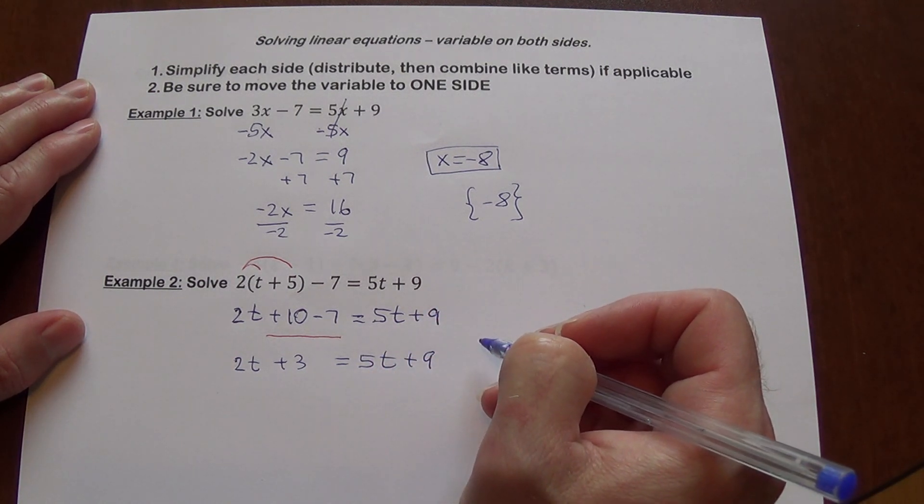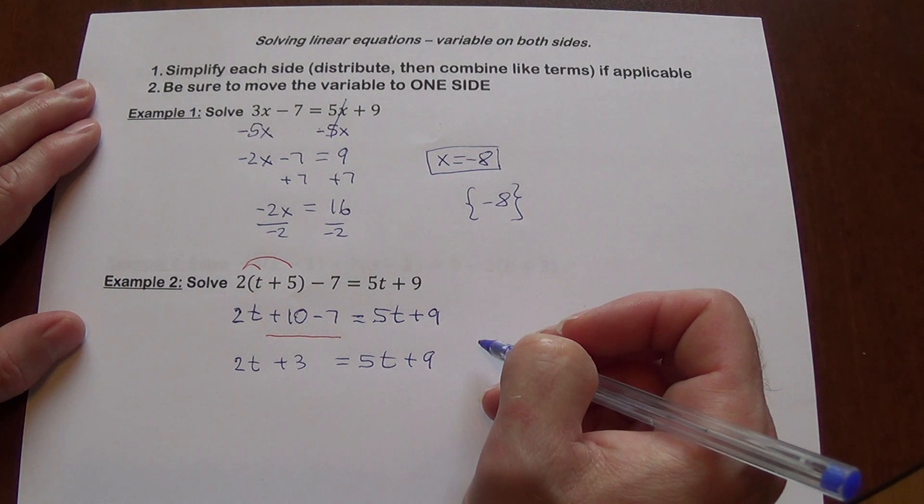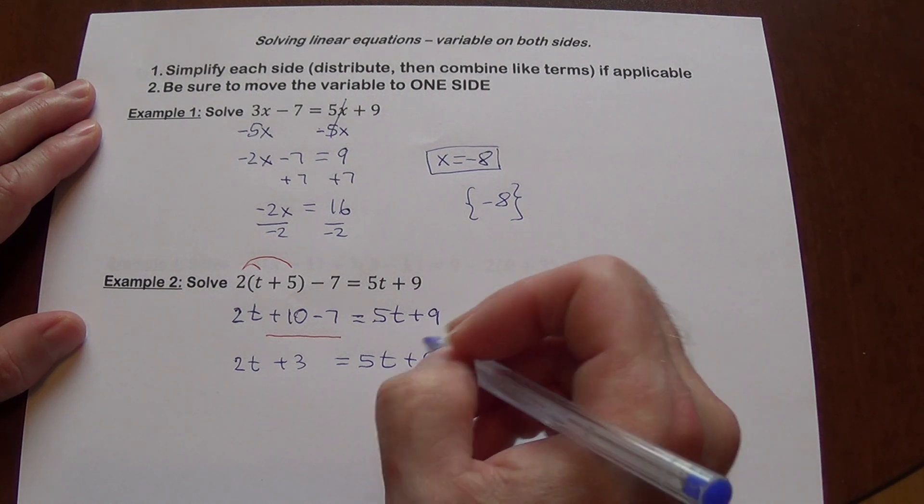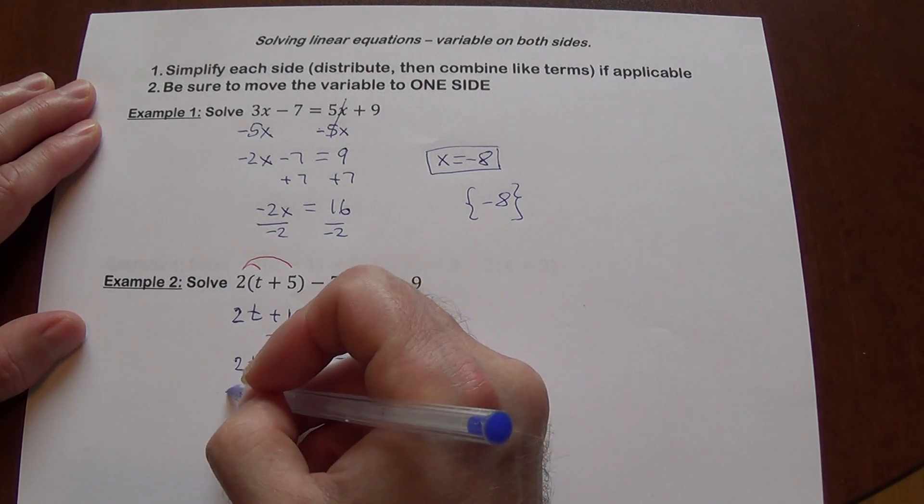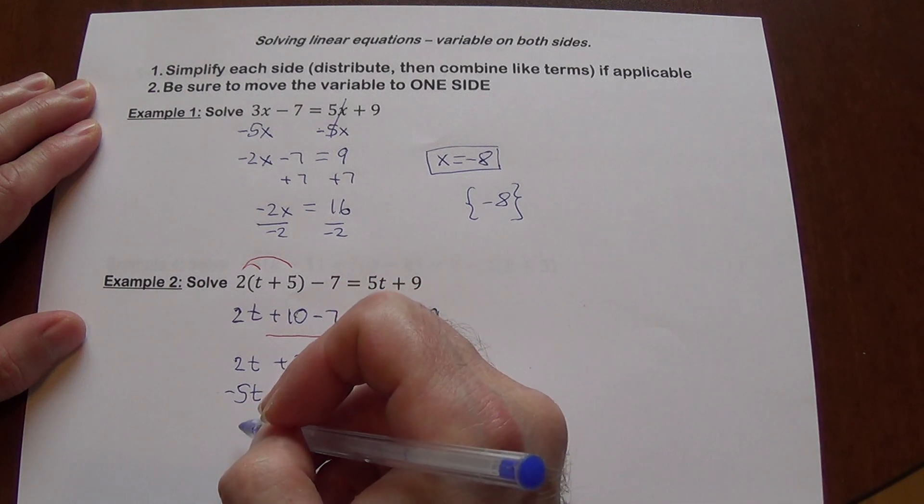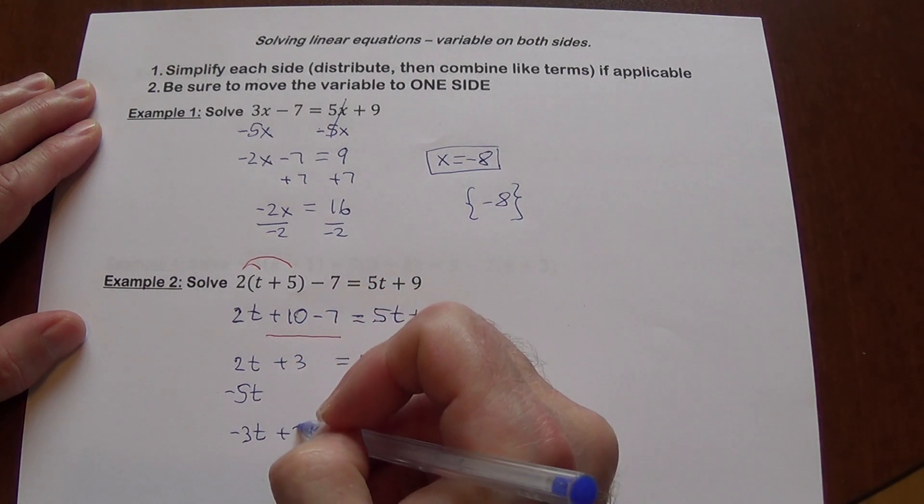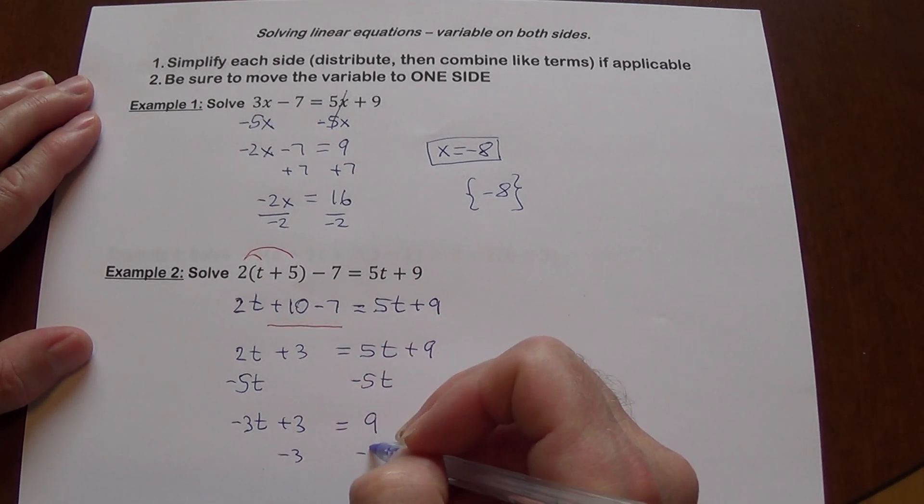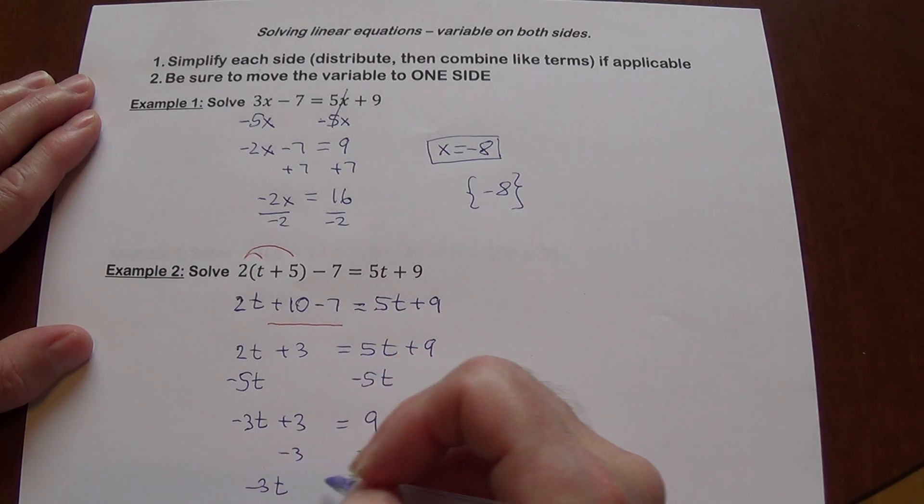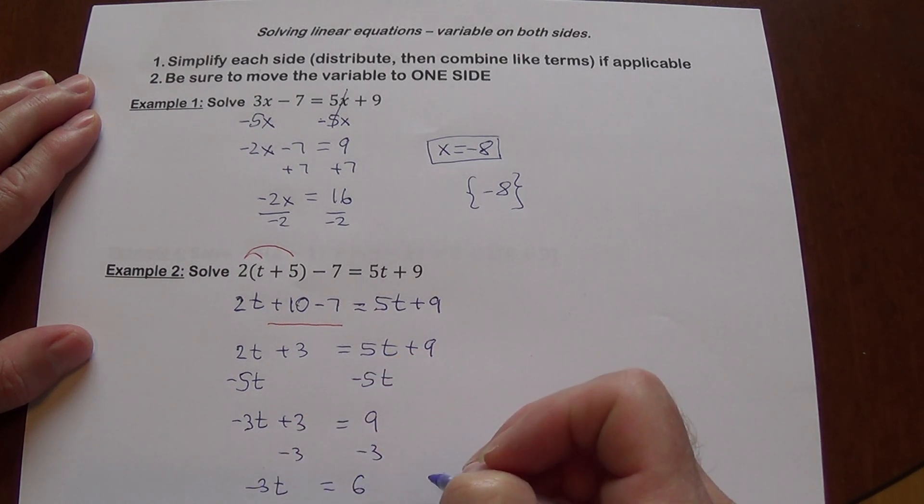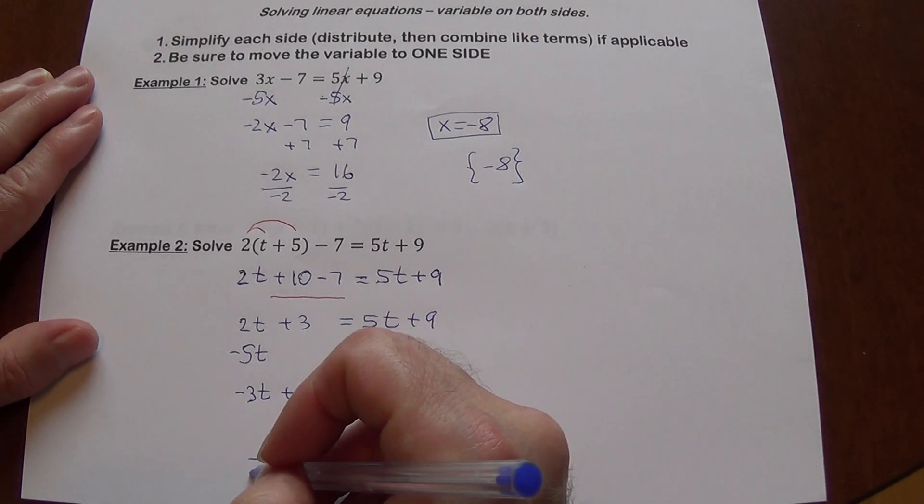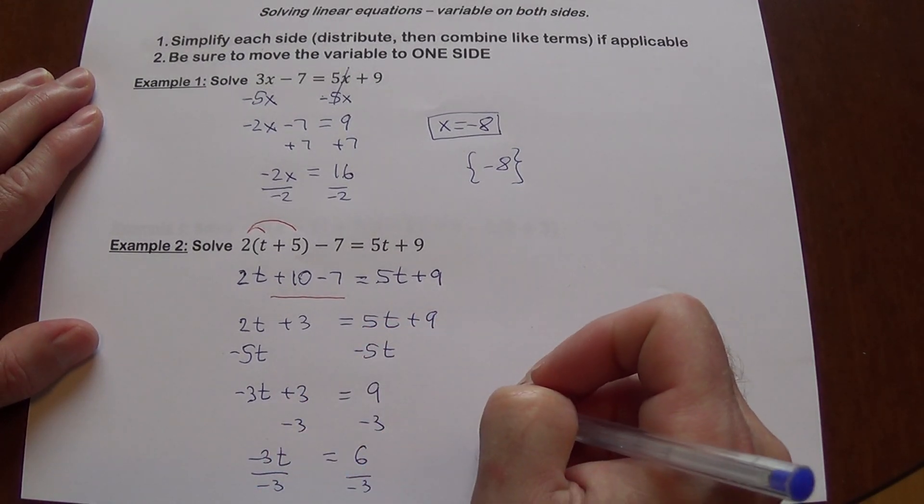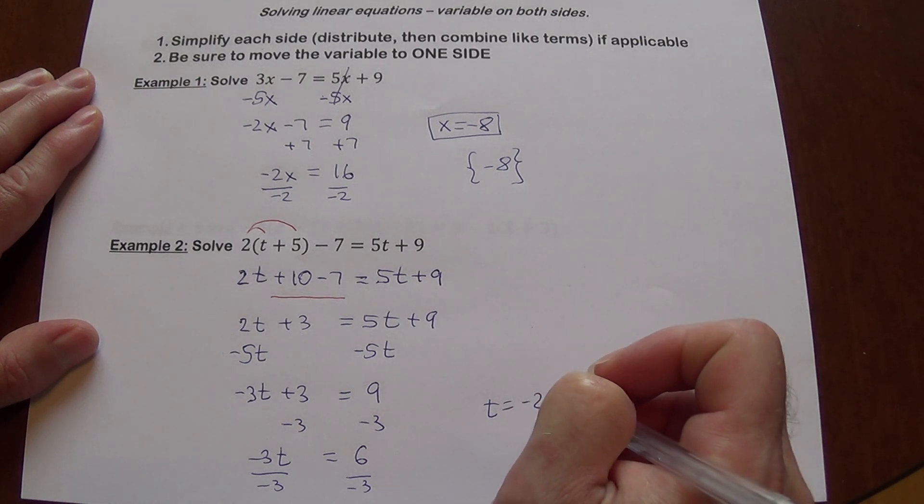At this point, if you look at example 1, you should probably see that it looks pretty much the same as the original example 1 did. So we are going to do the same thing. Subtract 5t, subtract 5t, we are going to get negative 3t plus 3 equals 9. Subtract 3, we are getting negative 3t equals 6. And then we divide both sides by negative 3. And our answer is going to be t equals negative 2.